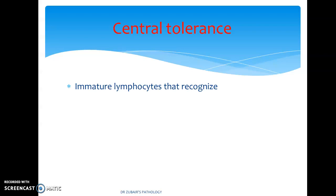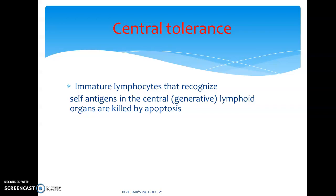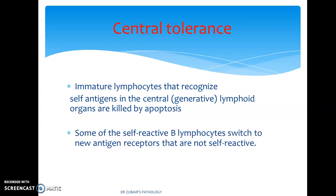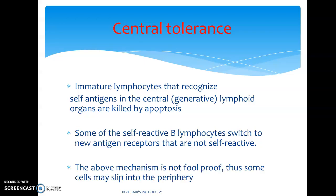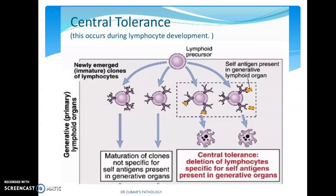In central tolerance, the immature lymphocytes that recognize self-antigens in the central generative lymphoid organs, such as the thymus, are killed by apoptosis — programmed cell death. Some of the self-reactive B lymphocytes switch to new antigen receptors that are not self-reactive. However, this mechanism is not foolproof, so some cells may slip into the periphery. In central tolerance, the lymphocytes carrying self-antigens are deleted or destroyed.